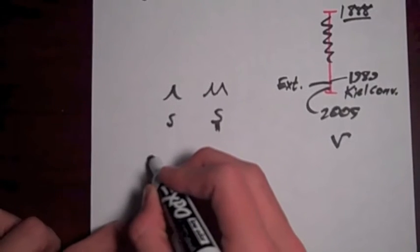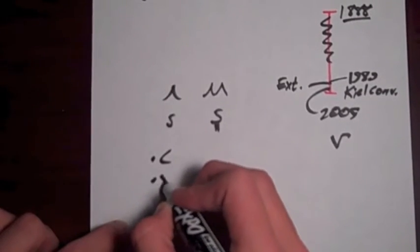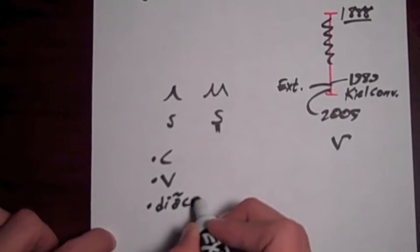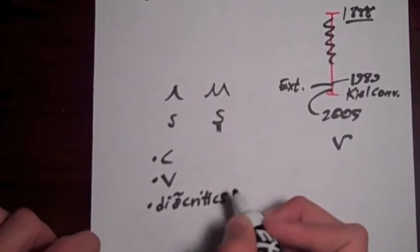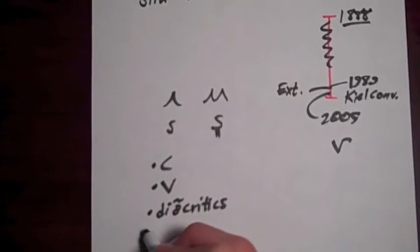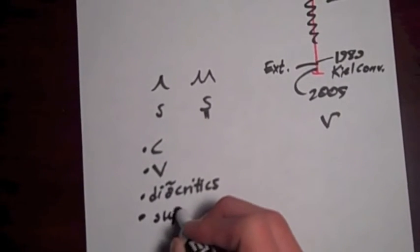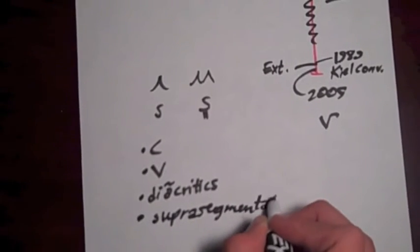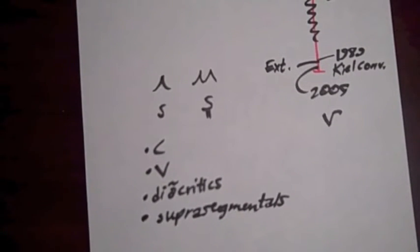The alphabet has symbols for consonants and vowels, but also has diacritics, like that one, which help indicate little details. And it has suprasegmentals. These indicate things like tone.